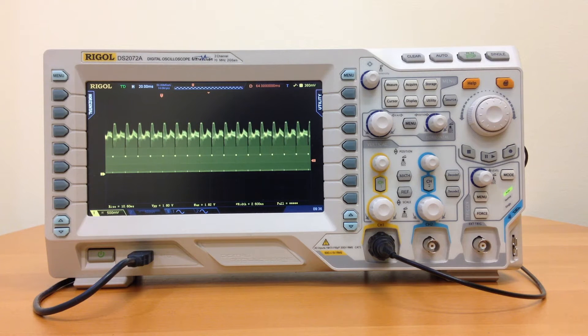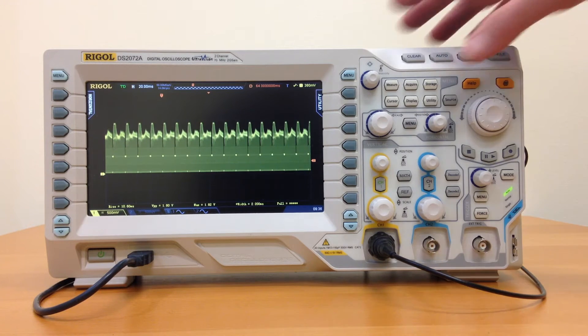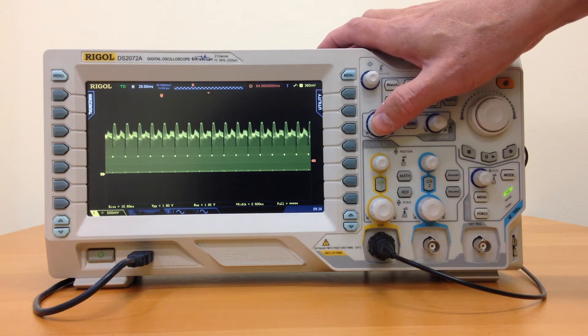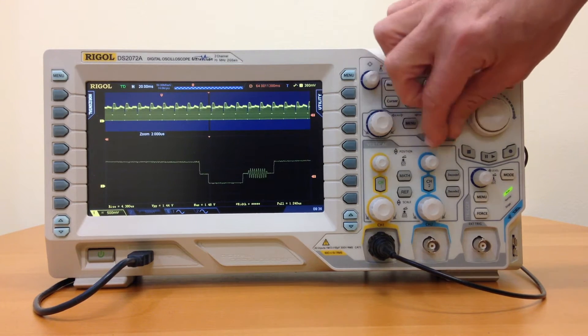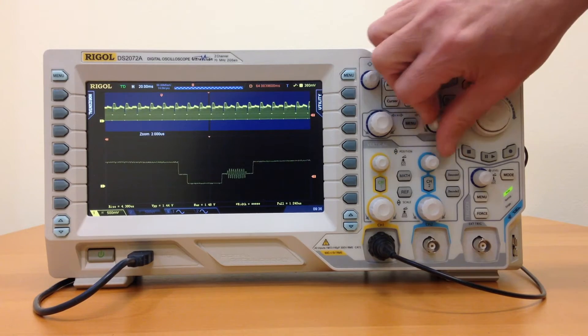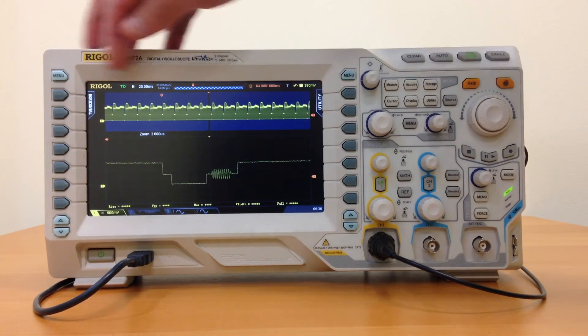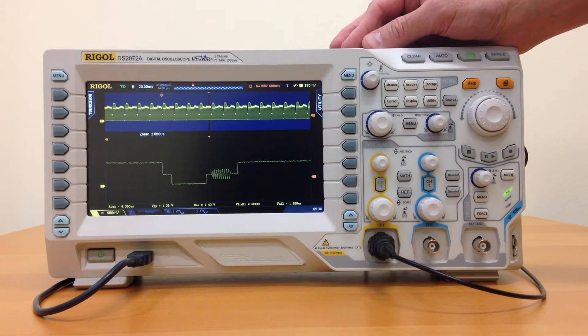Standard memory length on DS2008 is 14 mega points with 28 mega points optional, allowing us to capture large amounts of signal and zoom in to incredible levels. Here we can see color burst signal on an analog video capture, where we've captured many fields and are looking at individual color burst from lines.